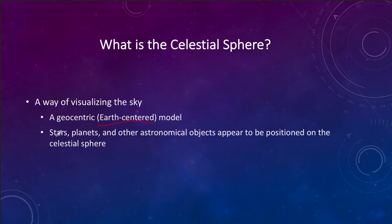All of the stars, all of the planets, all of the other objects that we see — things like galaxies — all appear to be positioned at various points on the celestial sphere.